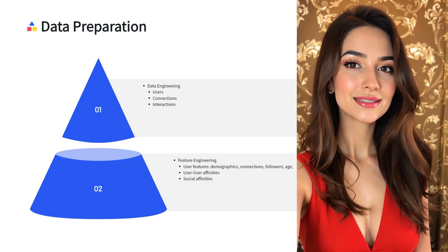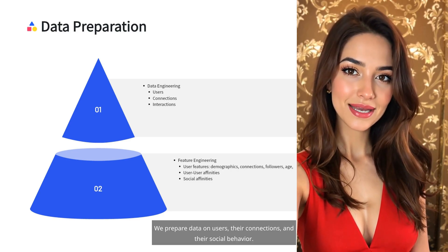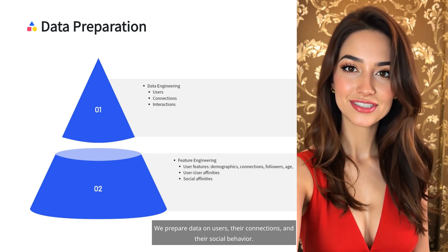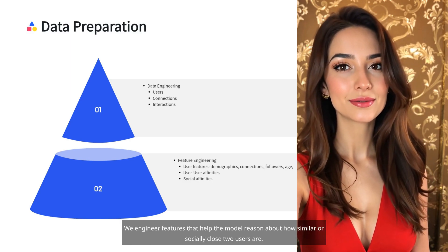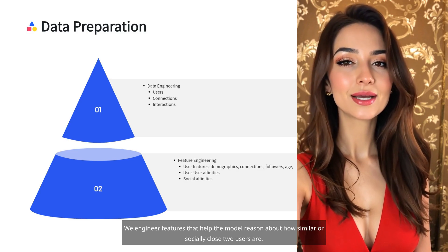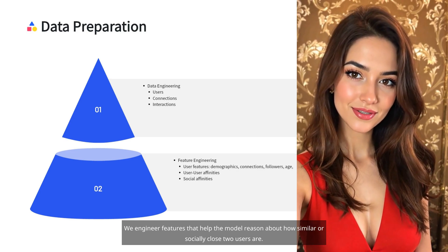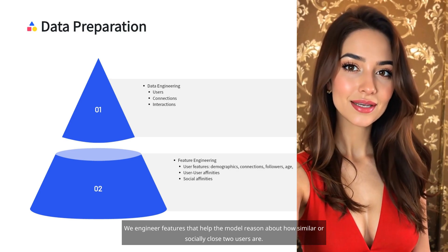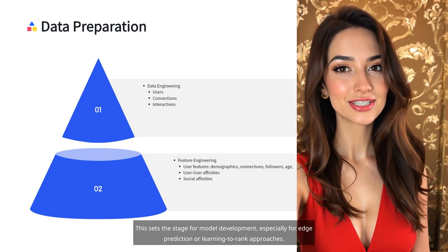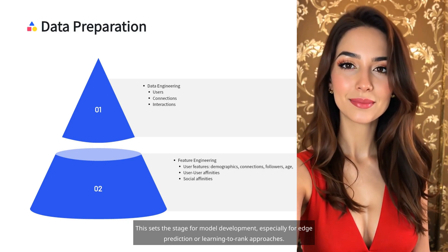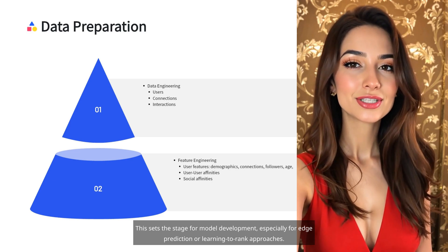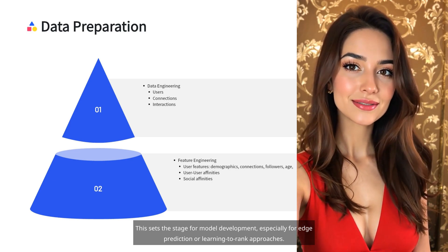To summarize the data preparation phase: we prepare data on users, their connections, and their social behavior, and engineer features that help the model reason about how similar or socially close two users are. This sets the stage for model development, especially for edge prediction or learning-to-rank approaches.